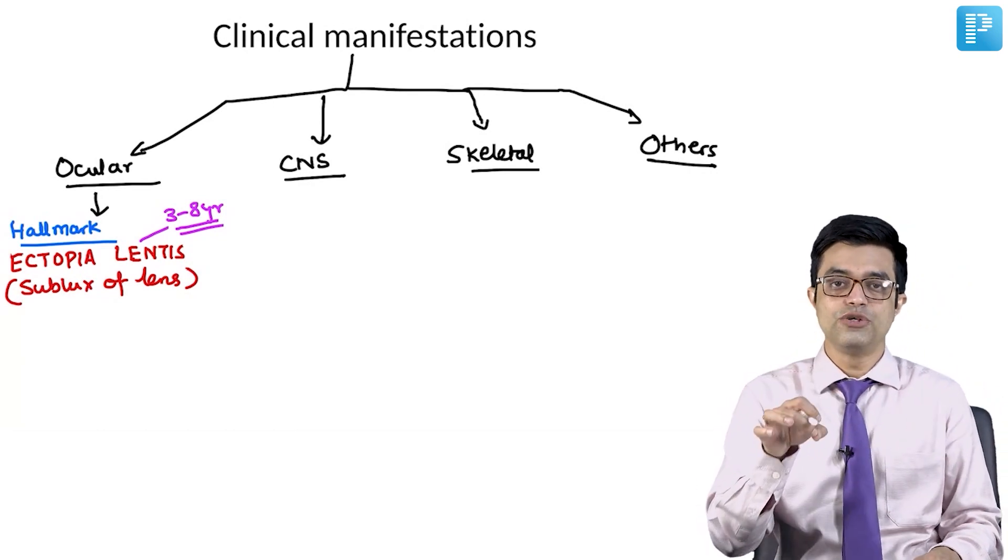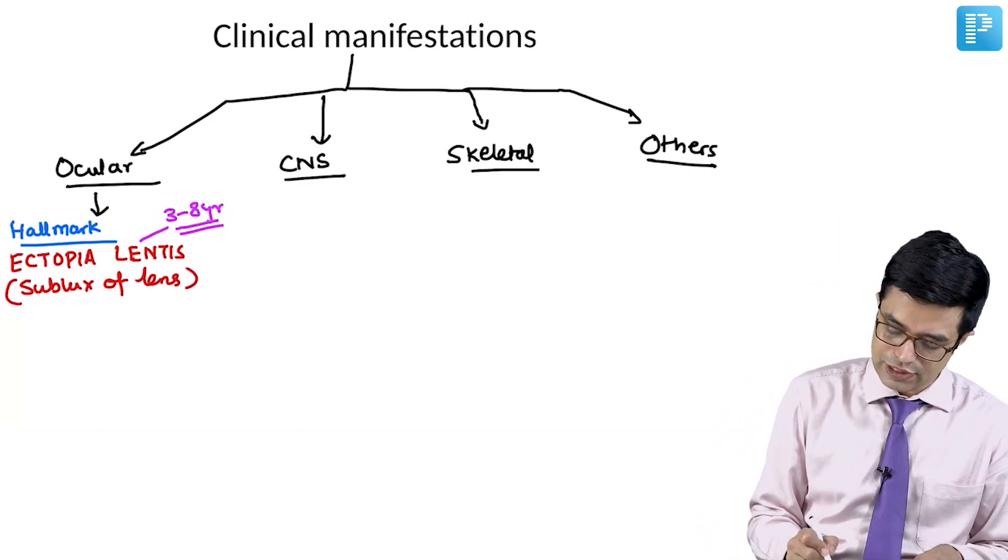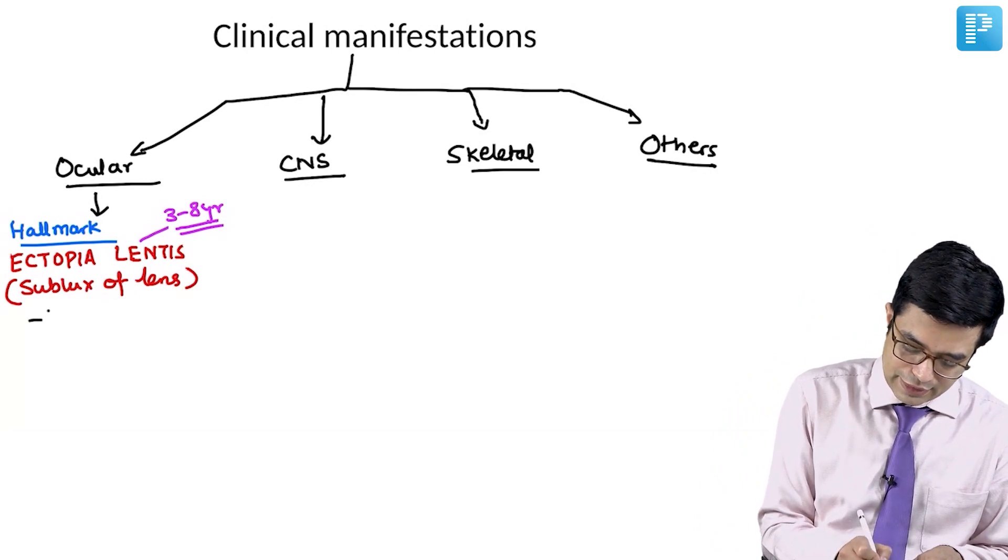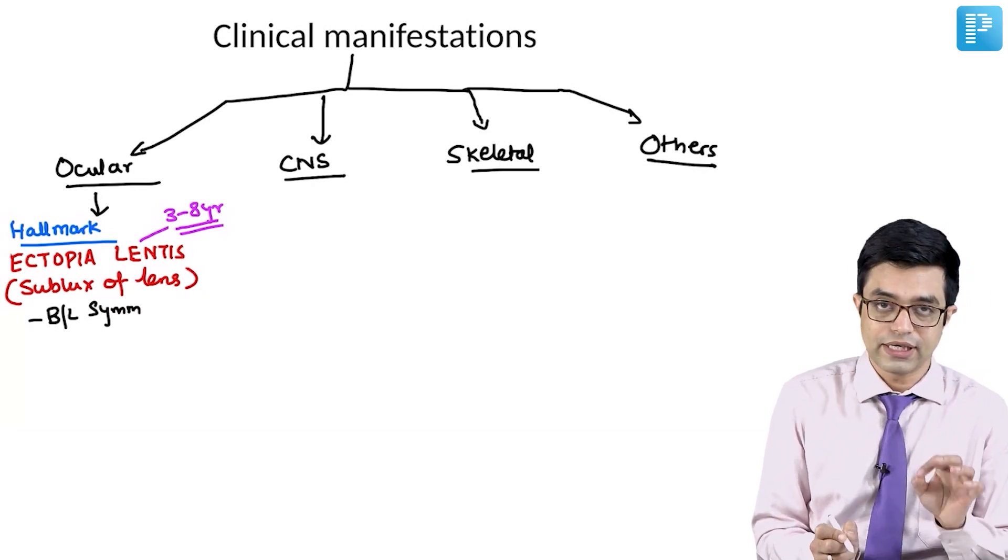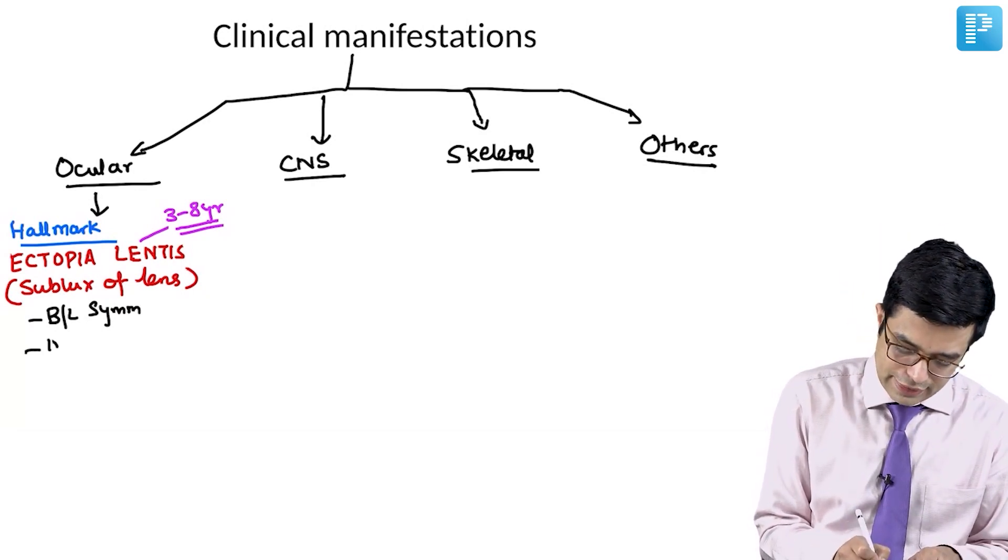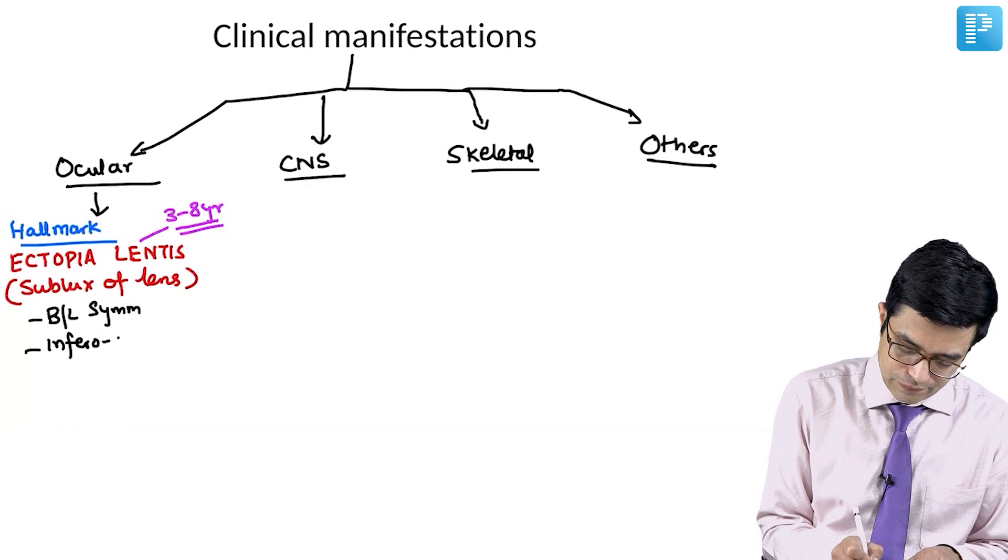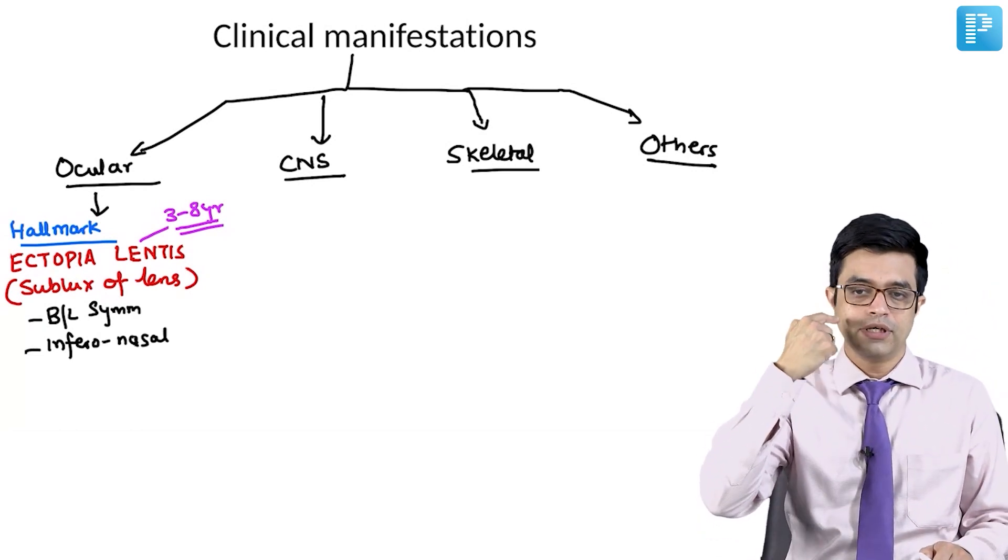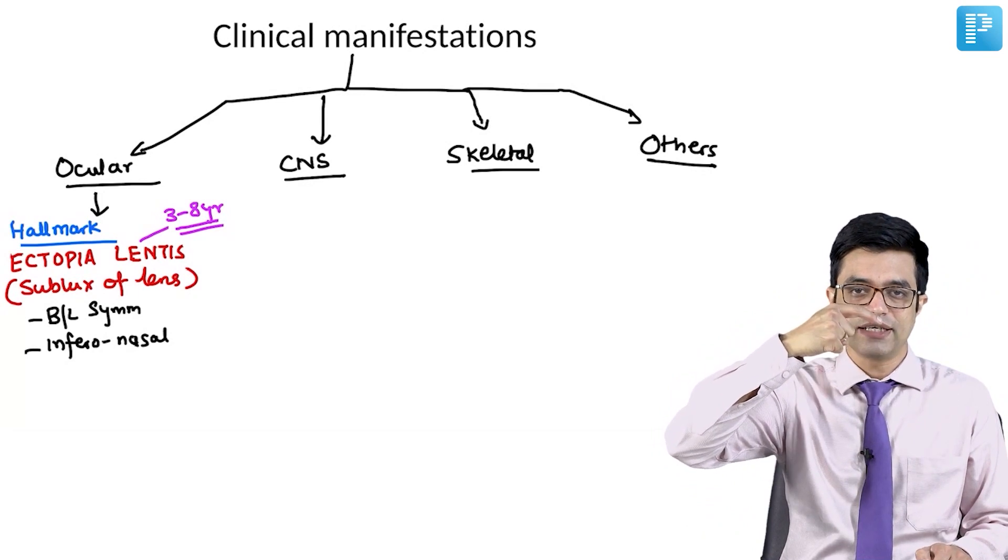3 to 8 years is the age during which it manifests. What are some of the points that you need to remember? This ectopia lentis is bilaterally symmetrical. Both the eyes are involved and it is inferonasal.